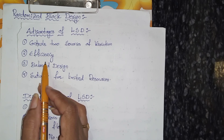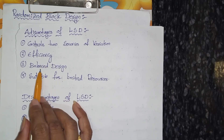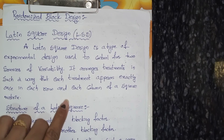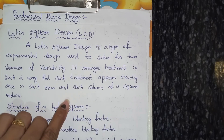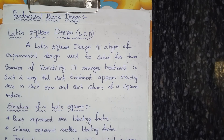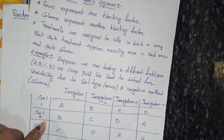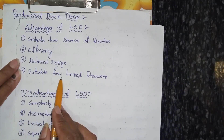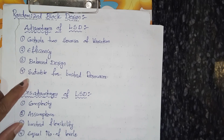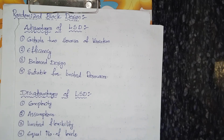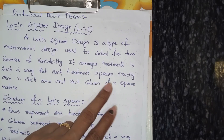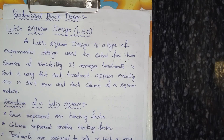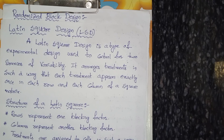Third advantage is balanced design — as discussed, each row and each column has each treatment exactly once, so that is called a balanced design. Fourth, it is suitable for limited resources, because it only handles two sources of variability. If we want to test three sources of variability, this design is not suitable.